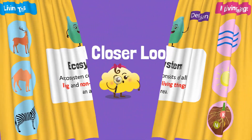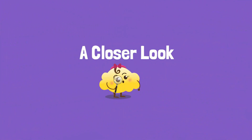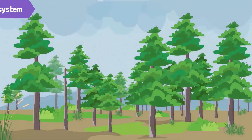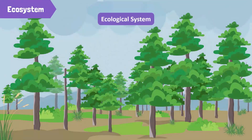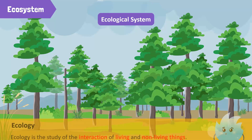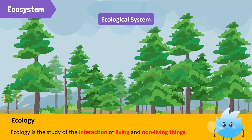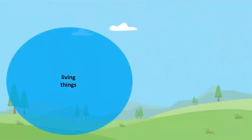Let's take a closer look to know more about the ecosystem. Ecosystem is a short form for ecological system. It comes from the word ecology — ecology is the study of the interaction of living and non-living things.